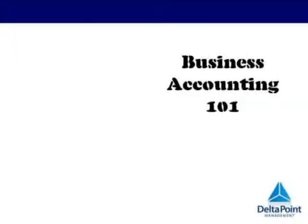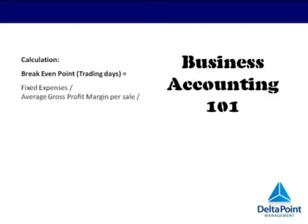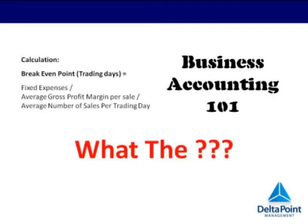So how is it calculated? Your breakeven point in trading days is your fixed expenses divided by your average gross profit margin per sale, divided by your average number of sales per trading day.